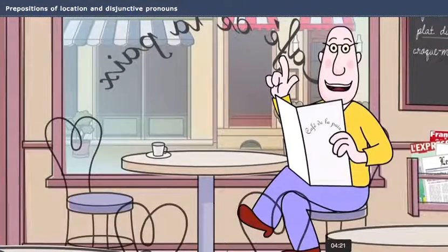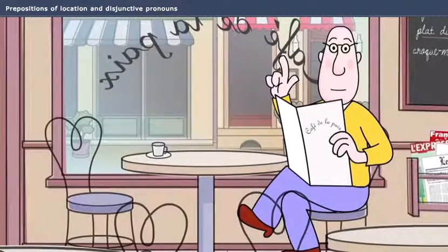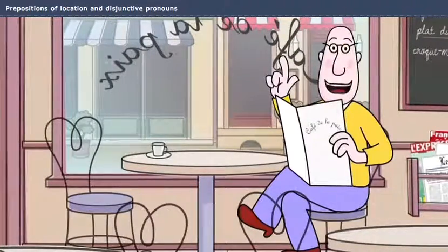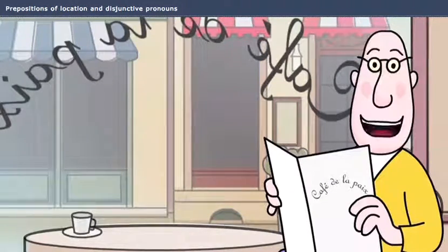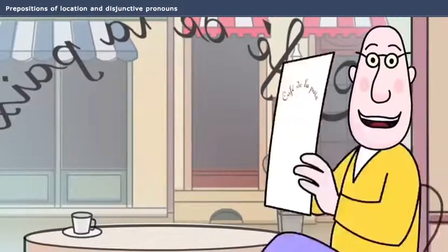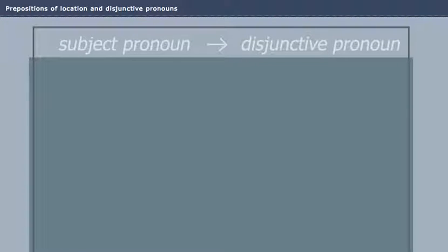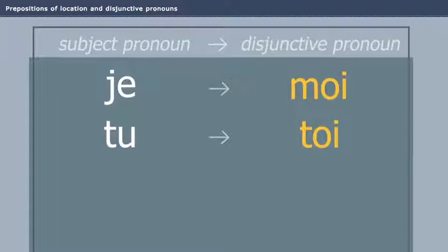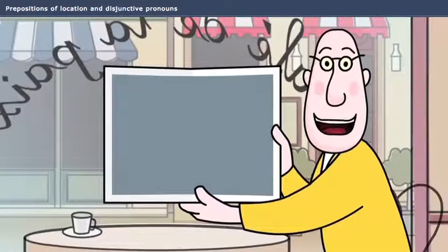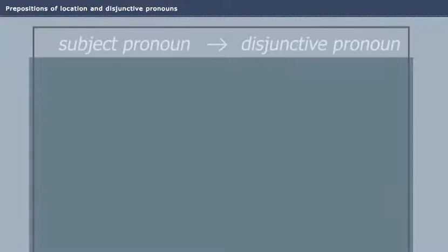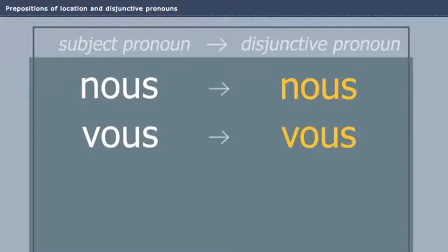Attention! When you want to use a pronoun to refer to a person after any type of preposition, don't use subject pronouns. Instead, use disjunctive pronouns. First, let's look at the singular disjunctive pronouns. Now, let's take a look at the plural disjunctive pronouns: nous, vous, eux, elles.